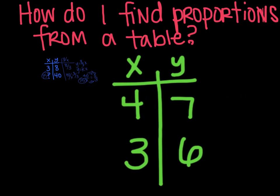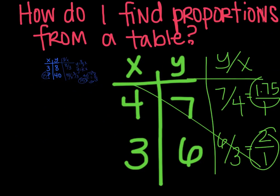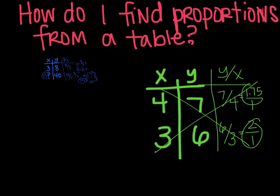Green table here. Same thing, whenever you see a table, you'll want to make your y over x ratio column. So 7 over 4 and then 6 over 3. Reduce these down. We get 1.75 over 1. And then this one is actually 2 over 1. And you can see that these are not the same. So this is not proportional. If y over x was the same, then it would be proportional.